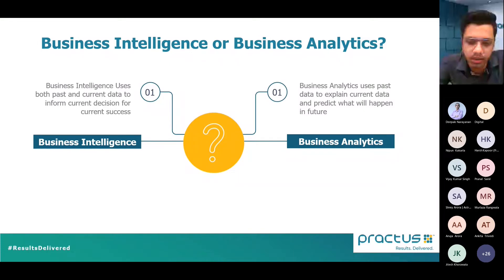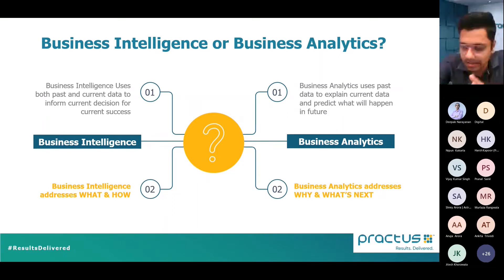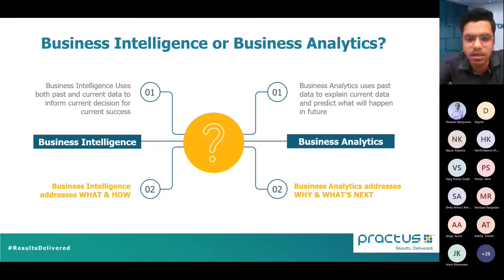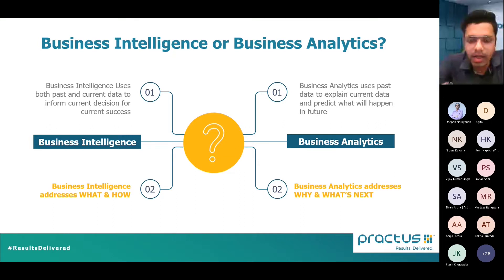Once you are done with business intelligence, business analytics predicts what will happen in the future. Business intelligence addresses 'what' and 'how' in the current scenario, whereas business analytics addresses 'why' and 'what's next.' For example, business intelligence is descriptive reporting — when a report shows you the sales variance for the current month, that is business intelligence. Why sales have been lower or higher falls under business analytics. It is very important to understand this distinction.